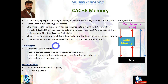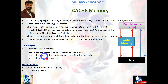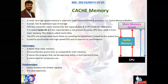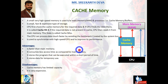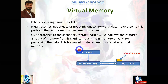Main advantages of cache memory: it is faster than main memory, consumes less access time compared to main memory, stores programs that can be executed within a short period of time, and stores data for temporary use. It is still volatile memory — once power is off, data is lost. The disadvantage of cache memory is that it has limited capacity and is expensive.